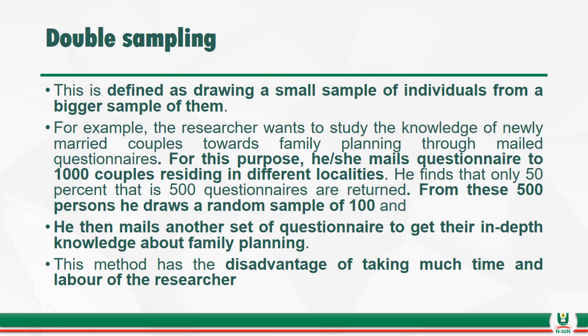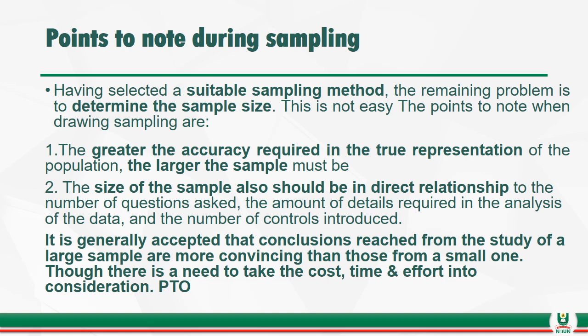Double sampling is defined as drawing a small sample of individuals from a bigger sample. For example, a researcher studying the knowledge of newly married couples towards family planning may mail questionnaires to 1,000 couples. If only 500 questionnaires are returned, the researcher draws a sample of perhaps 100 from those, then mails a follow-up questionnaire to gain in-depth knowledge about family planning. This method has the disadvantage of taking much time and labor from the researcher.